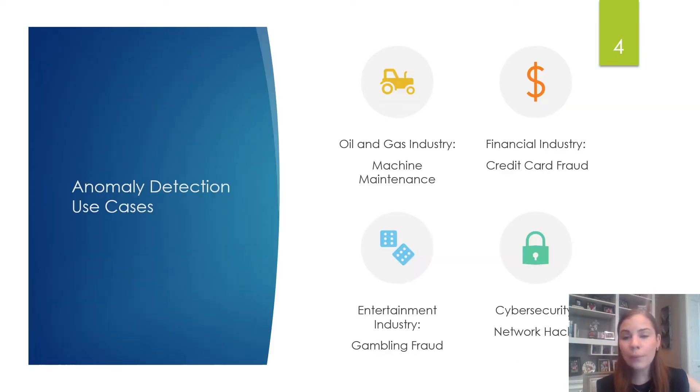So where would anomaly detection be useful? Anomaly detection can be used across different industries for a number of reasons. It can be used in the oil and gas industry, for example. You could train a model on the normal operating conditions of a compressor machine in order to be able to identify when a unit starts operating outside of its normal conditions and needs maintenance.